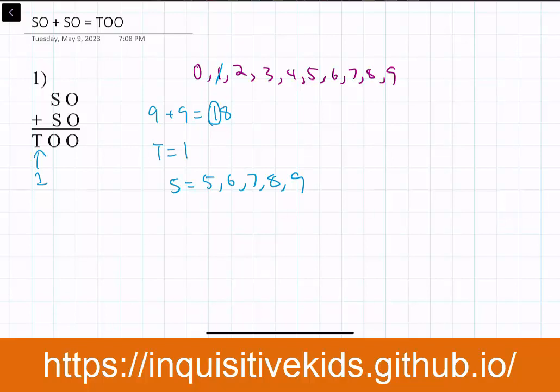And we can also list out the possibilities for O. If S equals five, then O equals zero. If S equals six, then O would equal two because six plus six equals twelve, and two is its unit digit. If S equals seven, then O would equal four. If S equals eight, then O will equal six. If S equals nine, then O will equal eight.